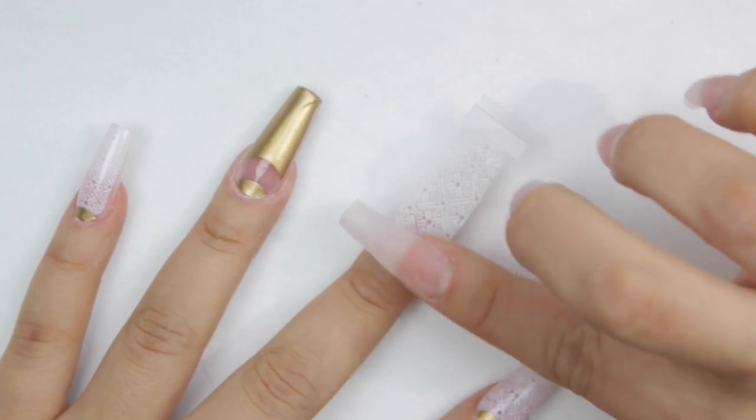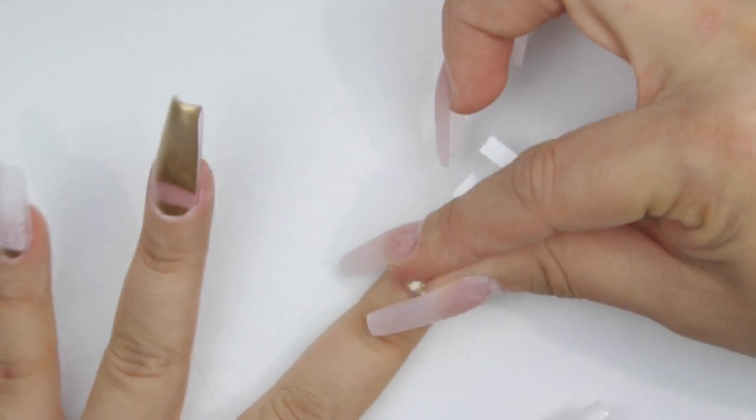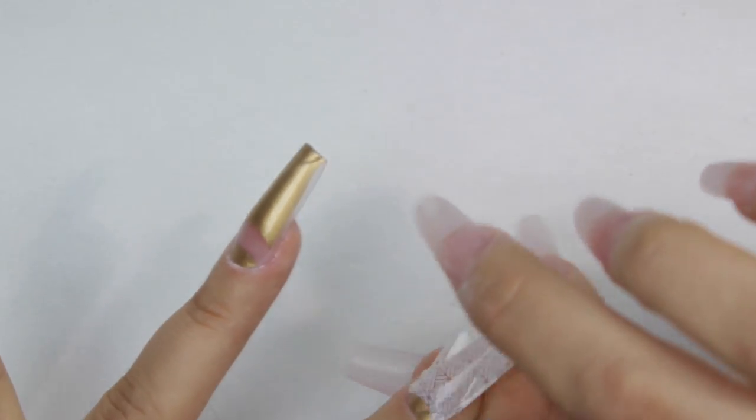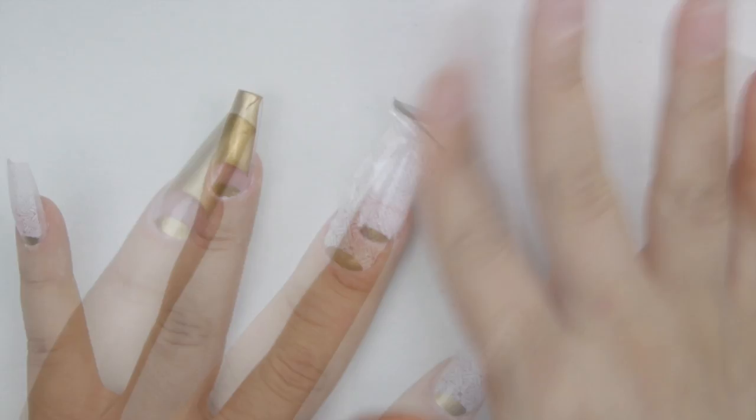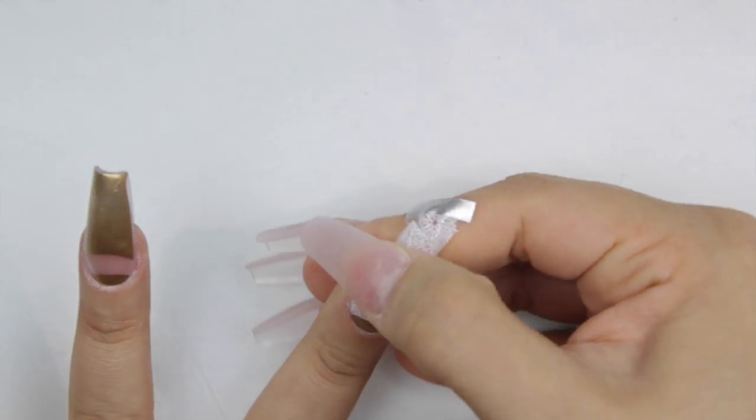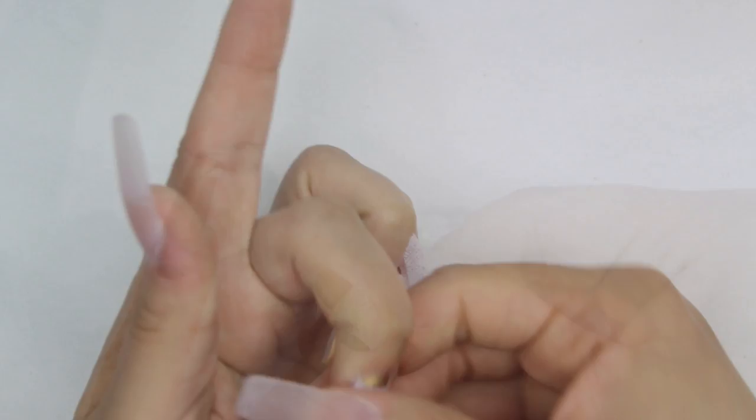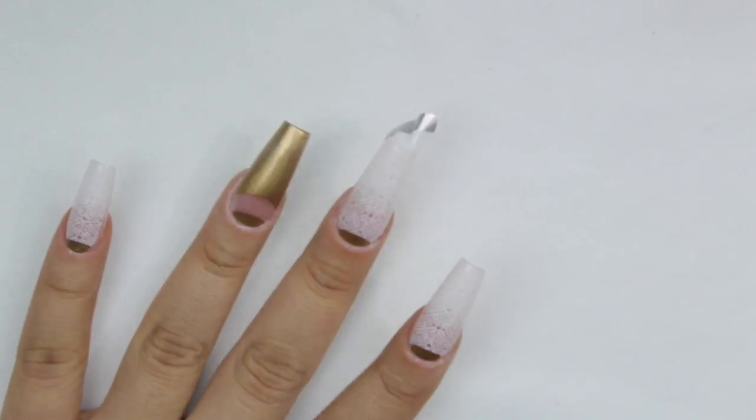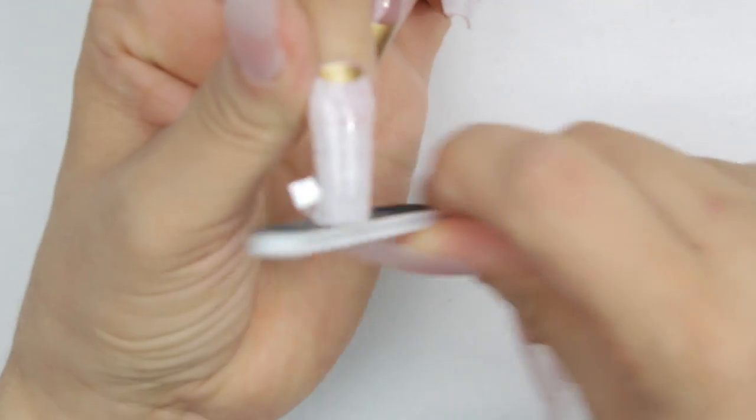You can see I adhere it to the cuticle area first, making sure I apply the cuticle, then I go through the center making sure that center is stuck well. Take off that top plastic, then the sides. This one came out better with more practice.